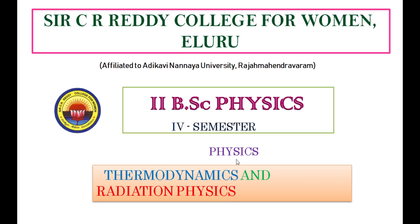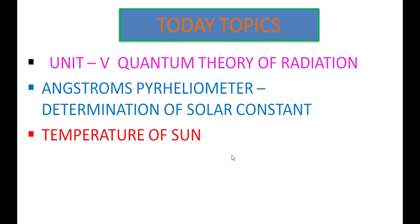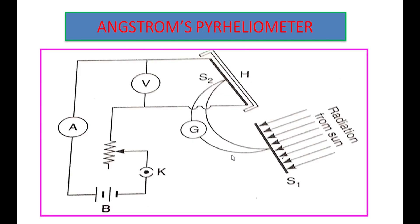Good morning everyone. Today my class is for 2nd BSc Semester 4 for all physics combination groups. Today I am going to discuss about Angstrom's pyrheliometer. It is used to measure the solar constant and the temperature of the sun. These two are the last topics in Unit 5, which is quantum theory of radiation. Now we will see each one in detail.